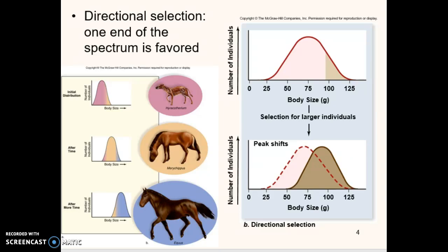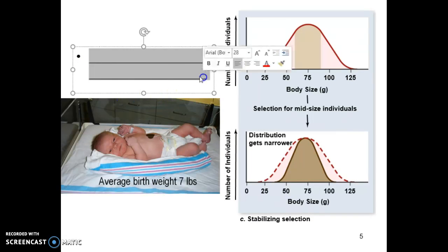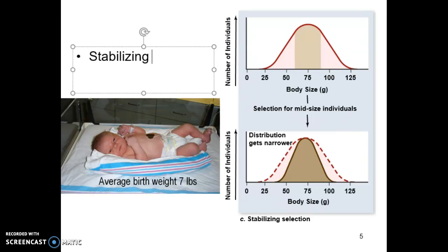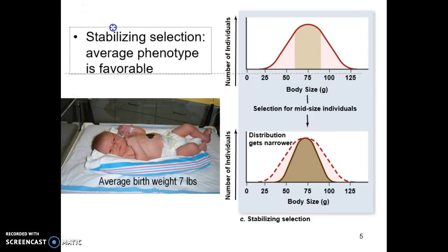The third type is stabilizing selection. In stabilizing selection, the average phenotype is favorable — being in the middle is perfect. Let's look at humans and average birth weight. For a full-term pregnancy with natural delivery — no C-sections, no preemies — if we took data from 1,000 babies born this week, birth weight would average roughly around 7 pounds. There is a spectrum, from about 2 pounds up to 15 or 16 pounds.